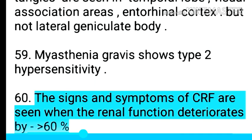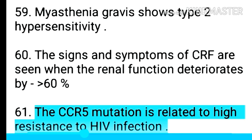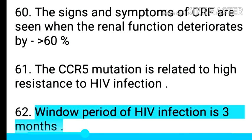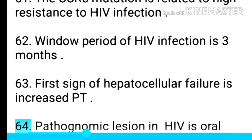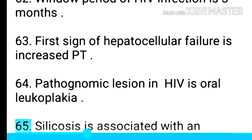Point 61: The signs and symptoms of CRF are seen when renal function deteriorates by greater than 60%. Point 62: The CCR5 mutation is related to high resistance to HIV infection. Point 63: Window period of HIV infection is 3 months. Point 64: First sign of hepatocellular failure is increased PT.